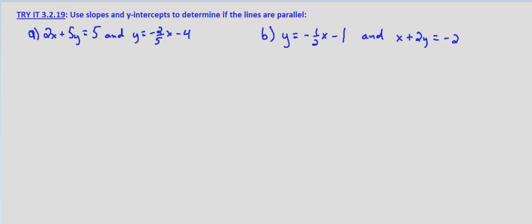If they have the same slope and the same intercept, then they're the same line, not parallel. If they have the same slope and a different y-intercept, then they are parallel. They'll never touch.